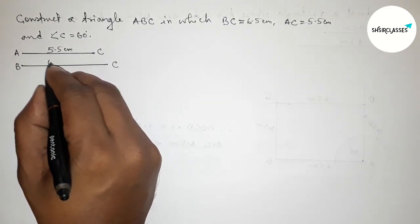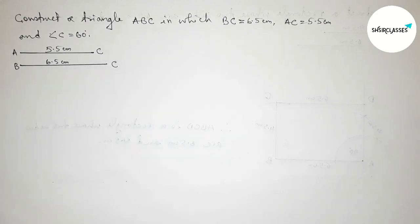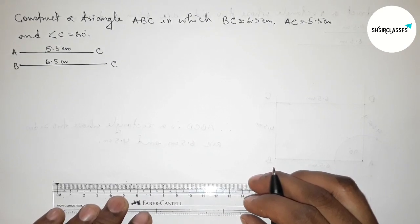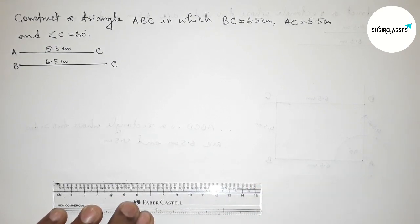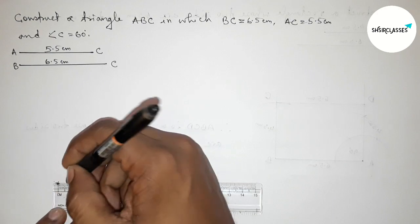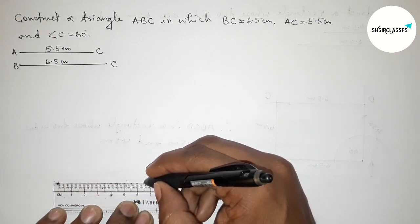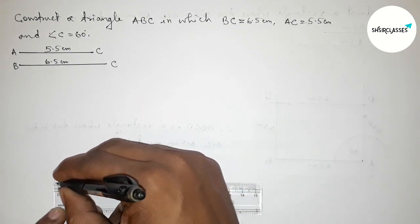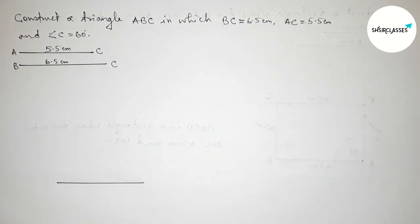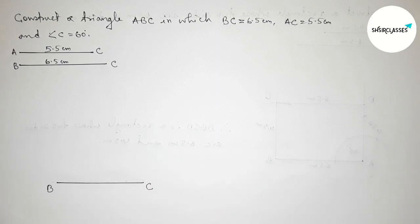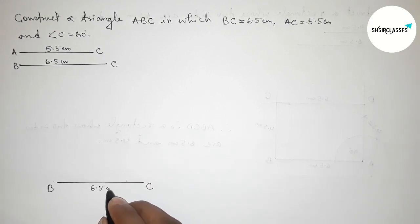Now we draw side BC equals 6.5 centimeters. Starting from zero, marking up to 6.5 centimeters. Taking point B at one end and point C at the other, so BC equals 6.5 centimeters.